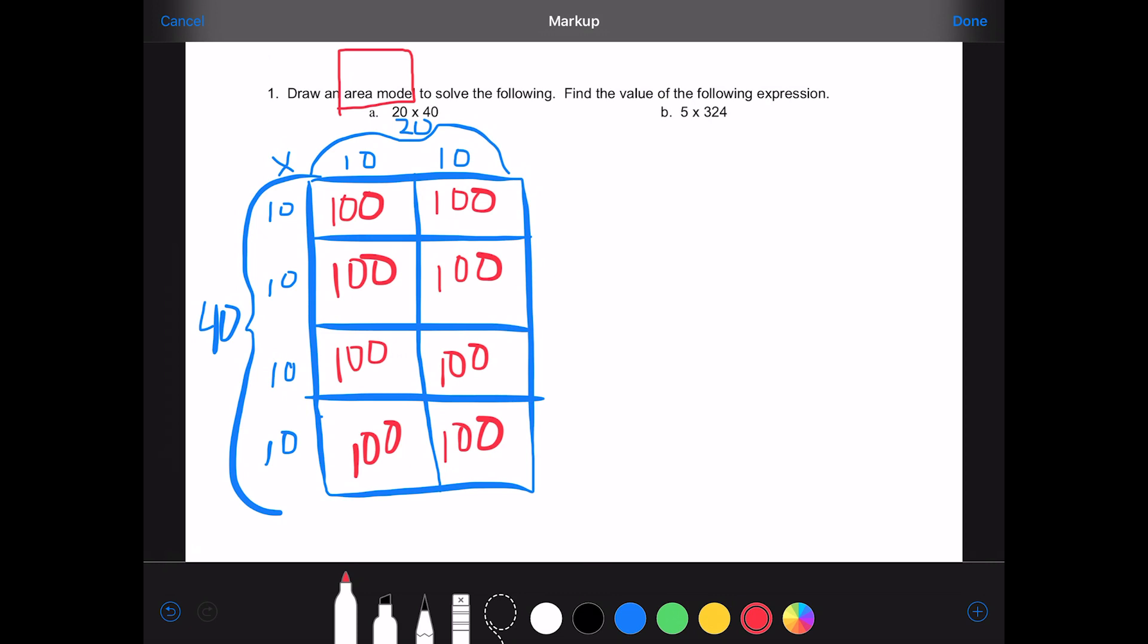So that means that 40 times 20 is going to be 100, 200, 300, 400, 500, 600, 700, 800. So this would equal 800.